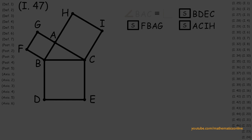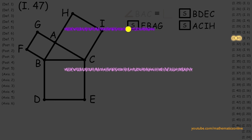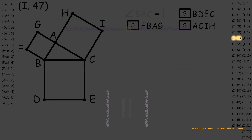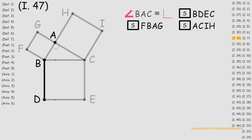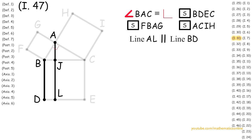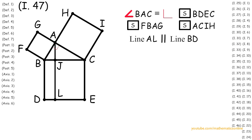Next, from Proposition 31, we proved that with any line and any point, we can always construct a parallel line through the given point. Therefore, with line BD and point A, we construct line AL such that it is parallel to line BD. And next, we create line AD and line CF.